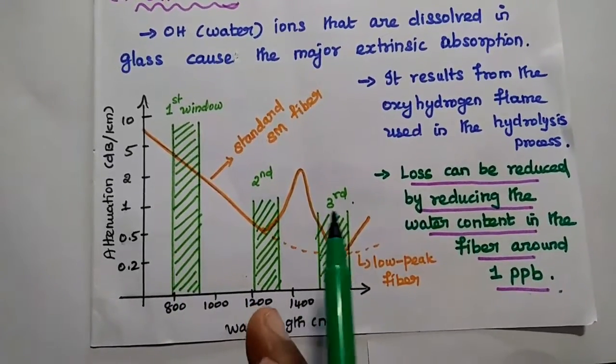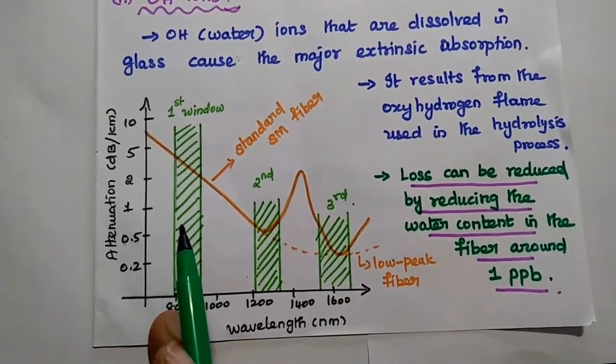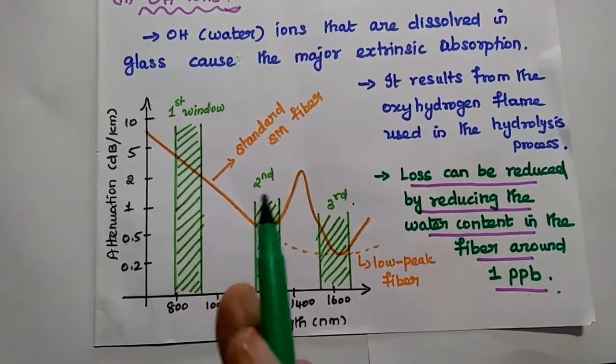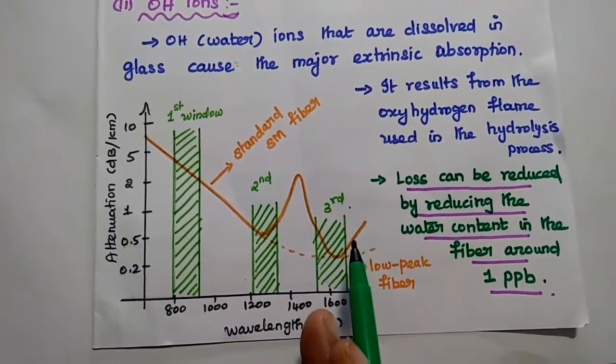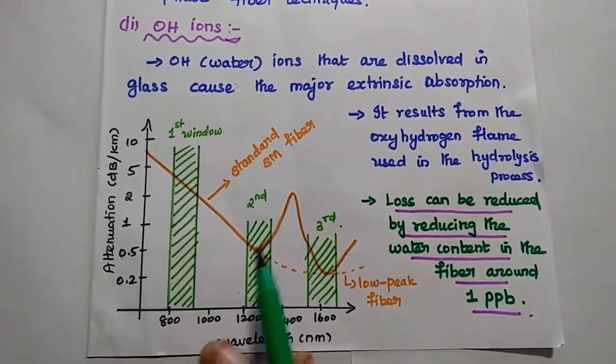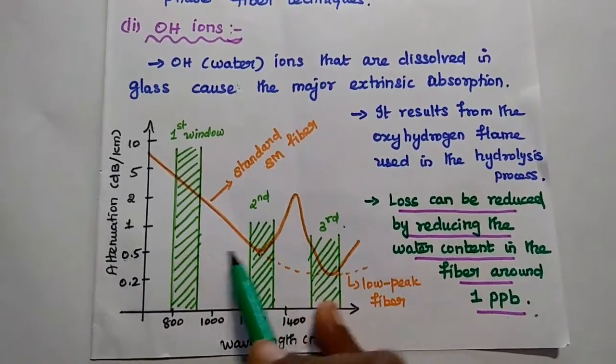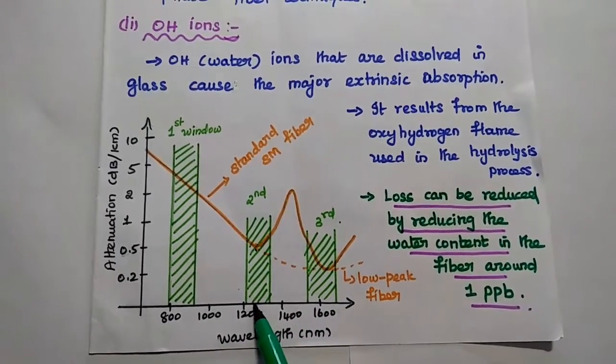We can consider three transmission windows: first window, second window, third window. First window is the short range wavelength window. Second one is medium range. Third one is long range. The attenuation due to OH ions value is 0.5 at 1310 nanometer range.